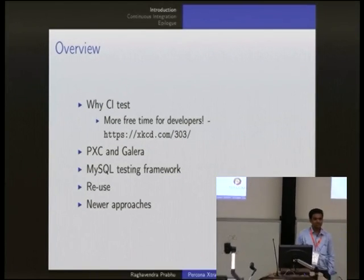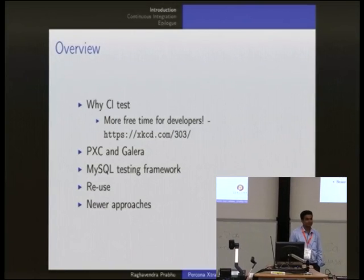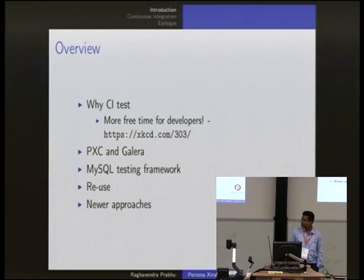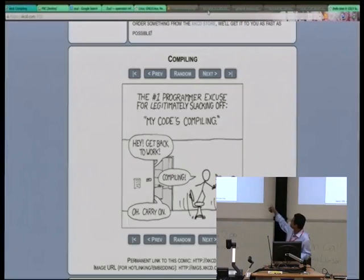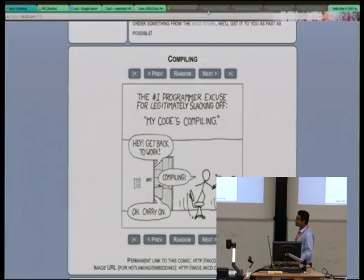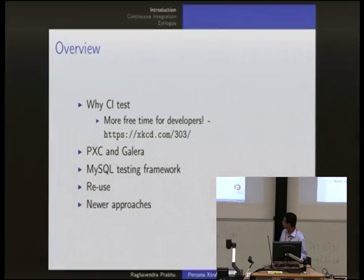The developers need more free time to think and to do other things. So having a CI allows us to do other things - they are fencing there, but other things as well.